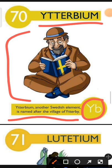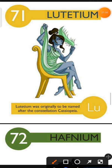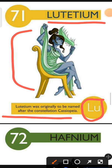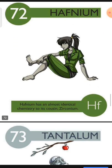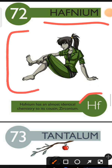Element number 71 is Lutetium. The characteristic of Lutetium is: Lutetium was originally to be named after the constellation Cassiopeia. Element number 72 is Hafnium. The characteristic of Hafnium is: Hafnium has an almost identical chemistry to its cousin Zirconium.